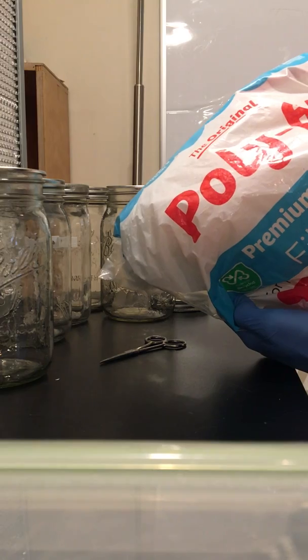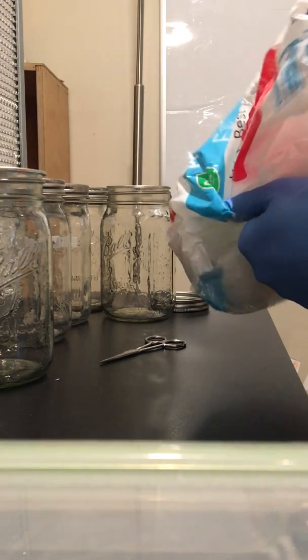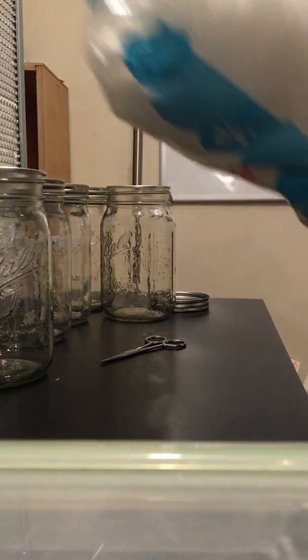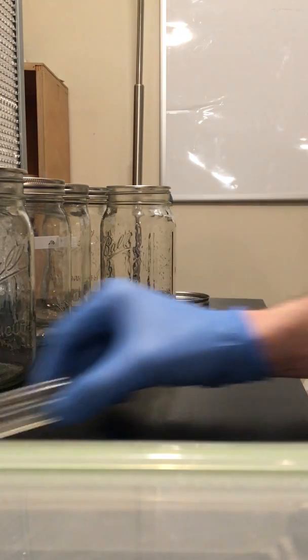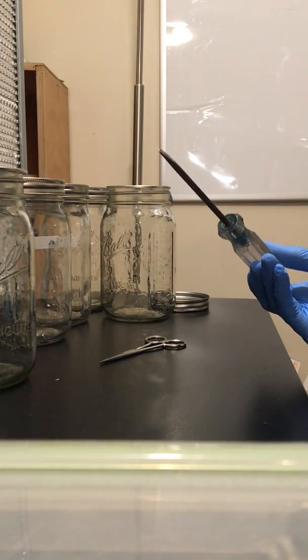I usually will get just regular polyfill. You can get this at any craft store or I got this at Walmart even. It's very accessible. You're going to want your mason jars and your lids, and that's pretty much it. And also some type of tool for making a hole.